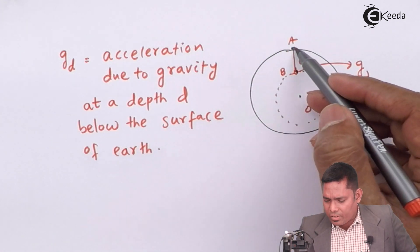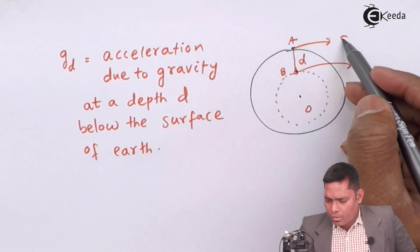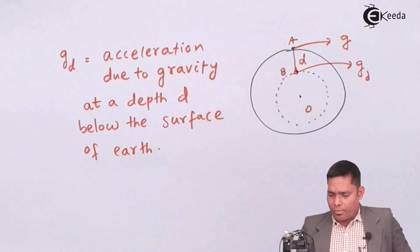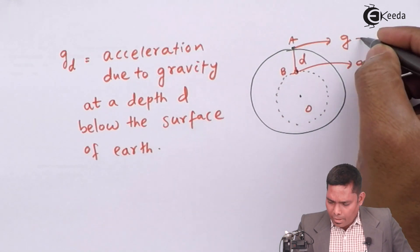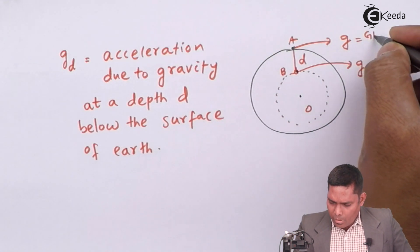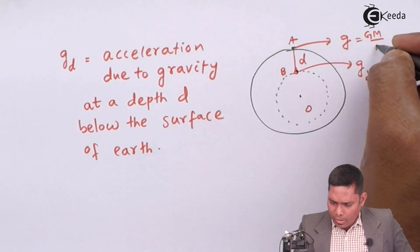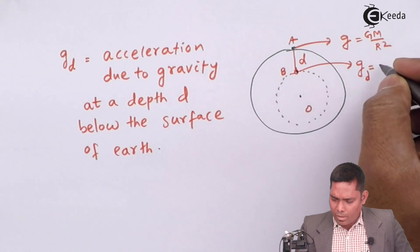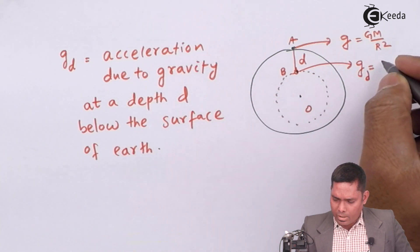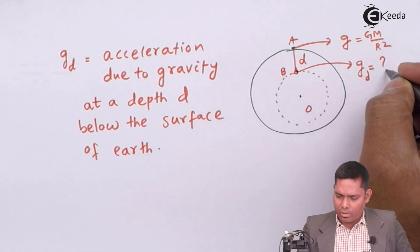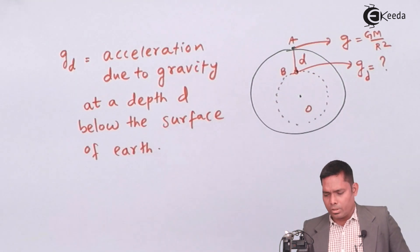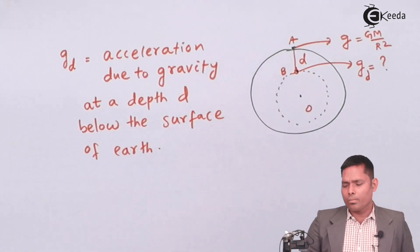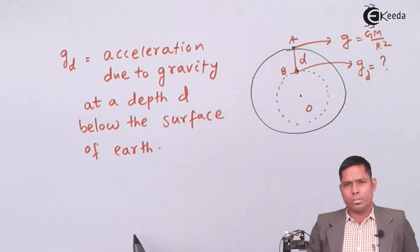On the surface at point A, the value of acceleration due to gravity is g, which is given by GM over R squared. At the position inside, we need to find G_d. Can you find the expression of G_d in terms of g?